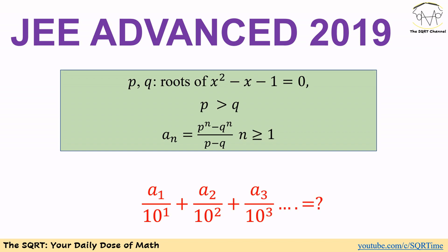Welcome to the security channel. In this video we are going to take another problem from JEE Advanced 2019. We have x squared minus x minus 1 is equal to 0. P and Q are roots of this equation and P is greater than Q. We are defining a general term a_n, defined as P to the power of n minus Q to the power of n over P minus Q, for n greater than or equal to 1.